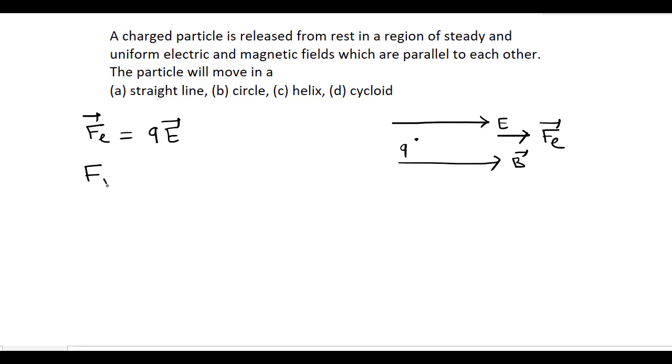due to the magnetic field, that is Fb, is equal to Q v cross B. But here the angle between v and B is 0, so this is 0. Sin 0 is 0. This comes from Q v cross B.